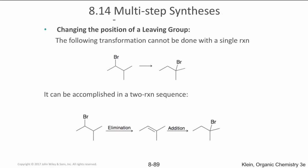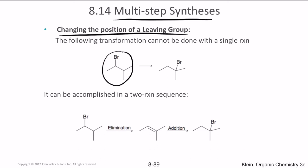There are also multi-step synthesis processes, which involve changing the position of a functional group. For example, moving bromine from one carbon to another cannot be done directly — it requires two steps: first, remove the bromine via an elimination reaction to create an alkene; then add the bromine back via an addition reaction to the desired position.